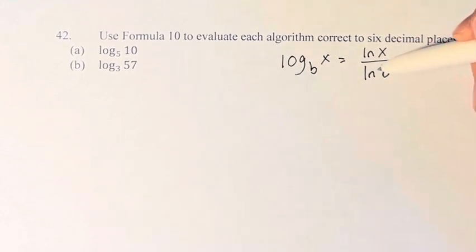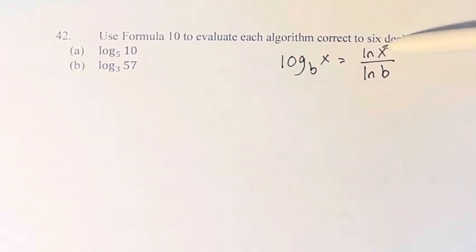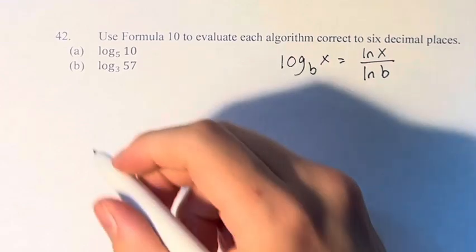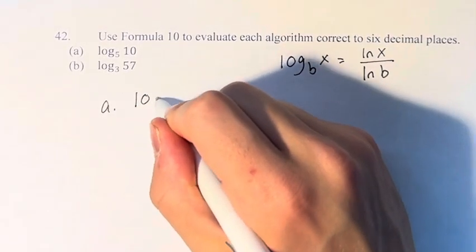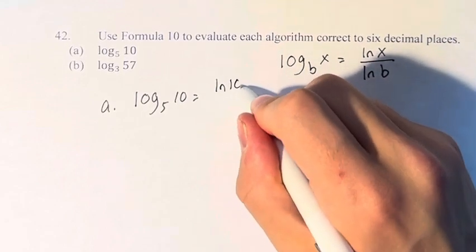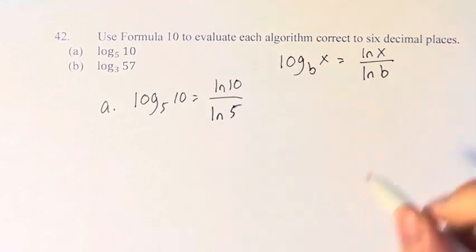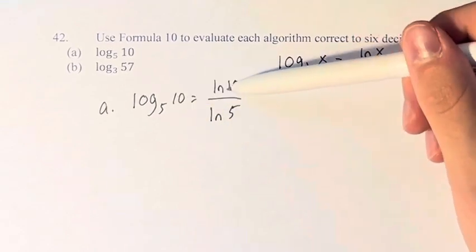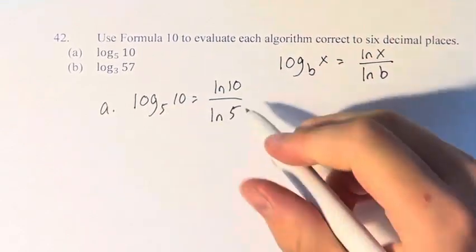We're going to use this formula and then calculate the natural log at these various points to solve the original logarithm. So for a, log base 5 of 10 is equal to ln of 10 over ln of 5. What the actual log is taking on is in the top, the base is in the bottom, and they're both ln.